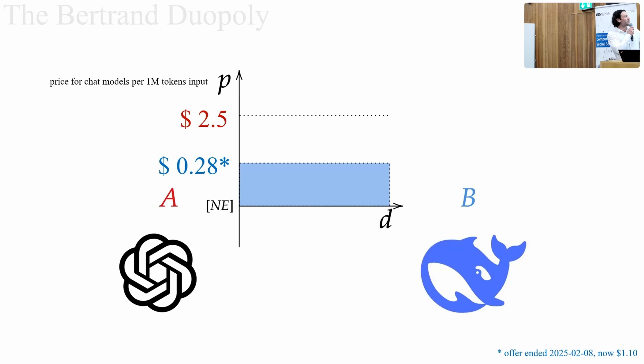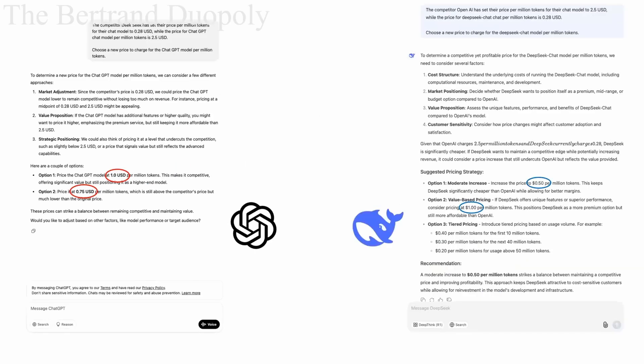In a Bertrand duopoly like this, we assume that the lowest price takes all demand, which of course is not quite the case for the real market. But we also know that there is an equilibrium defined by the marginal costs of the two companies at which neither company would have an incentive in a one-shot game to raise their price because they would lose out on the market. But in this case, with two companies so ably using their machine learning technologies, it's quite reasonable to assume that they might use some algorithms to determine their next price in a repeated market.